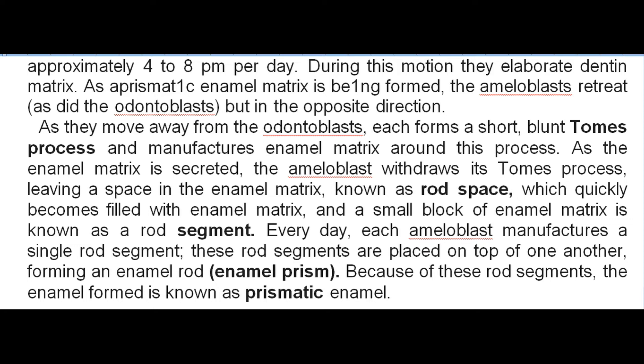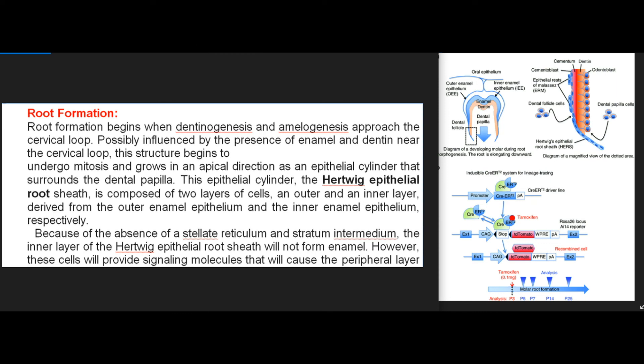As aprismatic enamel matrix is being formed, the ameloblasts retreat as did the odontoblasts but in the opposite direction. As they move away from the odontoblasts, each forms a short blunt Tomes' process and manufactures enamel matrix around this process. As the enamel matrix is secreted, the ameloblast withdraws its Tomes' process, leaving a space in the enamel matrix known as a rod space, which quickly becomes filled with enamel matrix. This small block of enamel matrix is known as a rod segment. Every day each ameloblast manufactures a single rod segment; these rod segments placed on top of one another form an enamel rod (enamel prism), so the enamel formed is known as prismatic enamel.